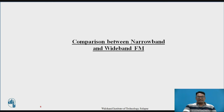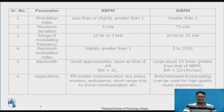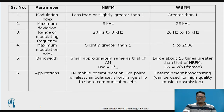The comparison between narrow band and wide band FM generation — this table gives you an idea for narrow band and wide band frequency modulation. The modulation index for narrow band is slightly less than 1, and for wide band it is greater than 1. Maximum deviation is 5 kHz for narrow band; for wide band it is up to 75 kHz. The range of modulating frequency for narrow band is 20 Hz to 3 kHz, whereas for wide band it ranges from 20 Hz to 15 kHz. The maximum modulation index for narrow band is slightly greater than 1, whereas for wide band it ranges from 5 to 2500.